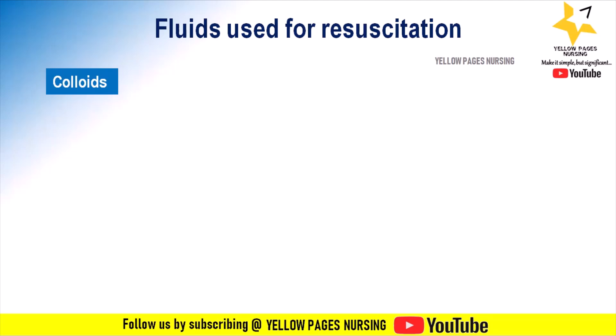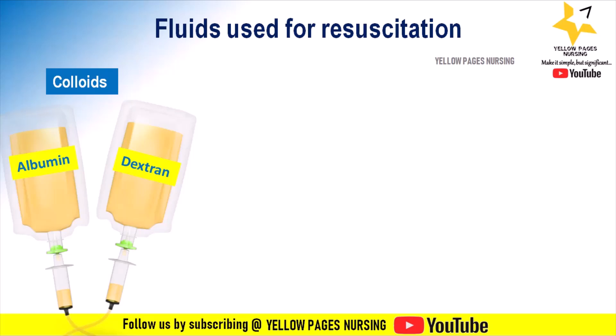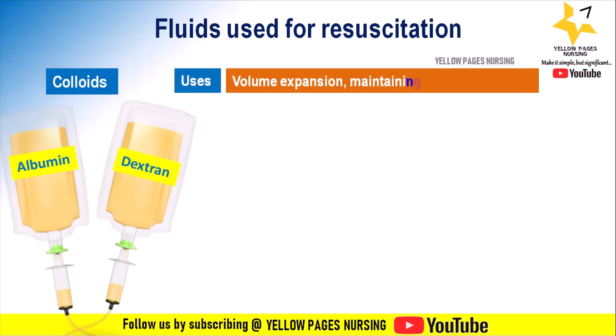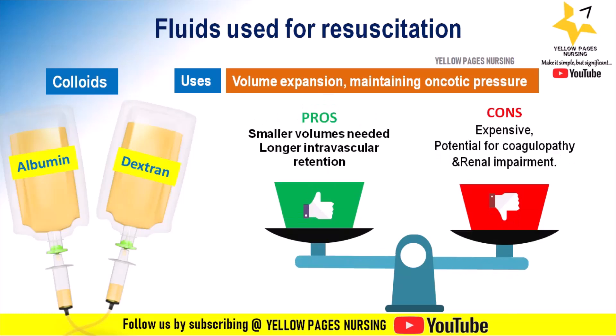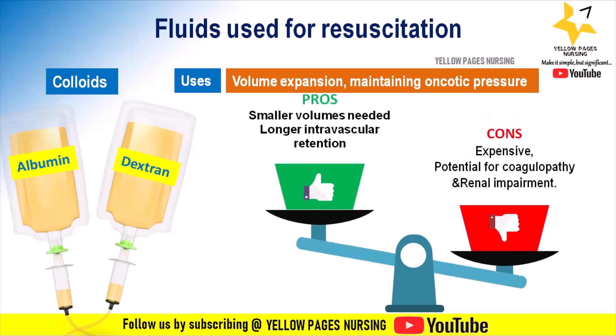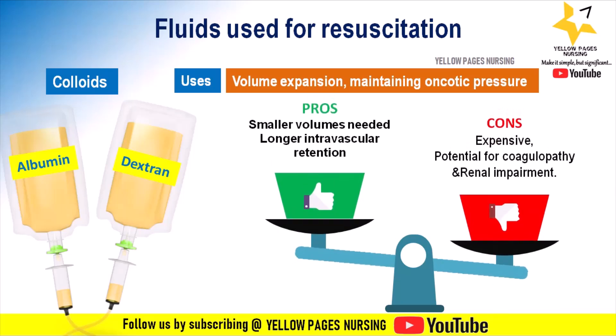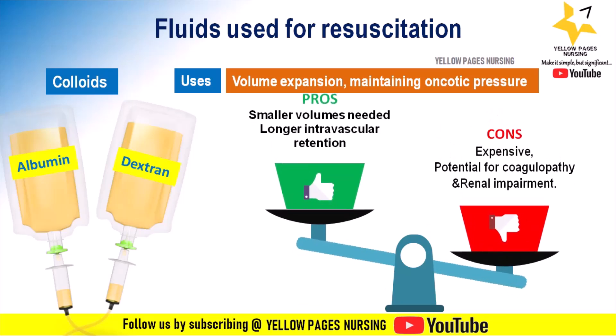Colloids are thicker solutions that stay in the bloodstream longer, helping to maintain blood volume. Examples include albumin, dextran, and hydroxyethyl starch. Their main uses are volume expansion and maintaining oncotic pressure. Pros include being required in smaller volumes and providing longer intravascular retention. Cons include being expensive, risk of allergic reactions, and potential for coagulopathy and kidney impairment.